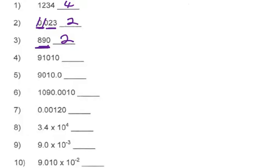For this number, we have 9101 — so all four of these first digits are significant. This zero right here is a trapped zero, so it's also significant. This zero in the back is a trailing zero, and since it doesn't have a decimal in the number, we have four significant digits.